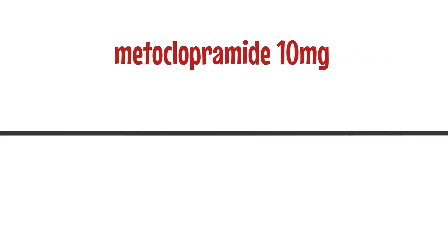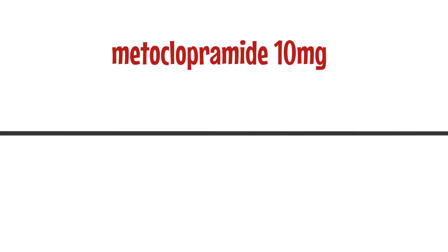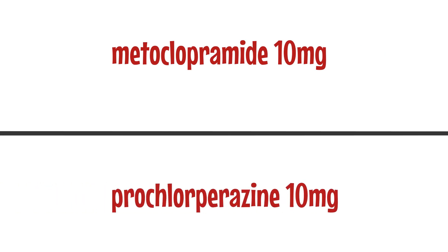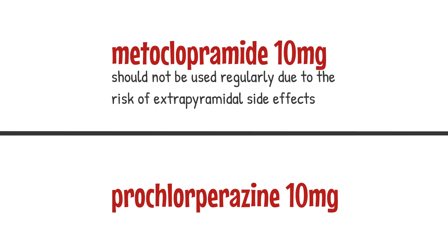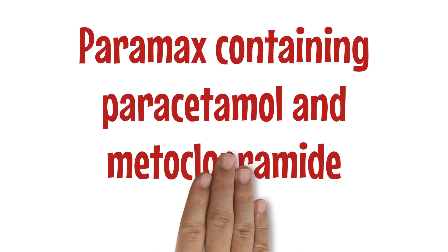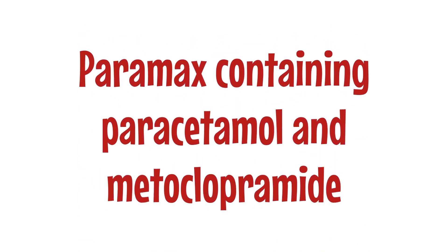In some cases, an anti-emetic is offered, such as metoclopramide 10mg or prochlorperazine 10mg. However, metoclopramide should not be used regularly due to the risk of extrapyramidal side effects. On prescription, combination products like Paramax, containing paracetamol and metoclopramide, can be prescribed.